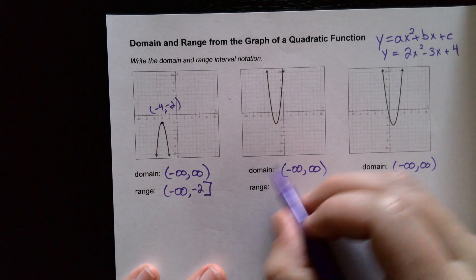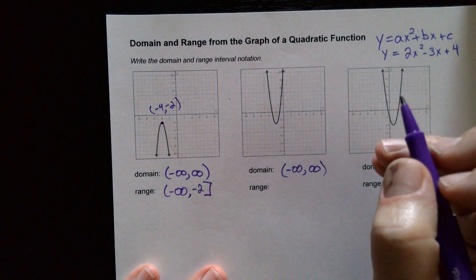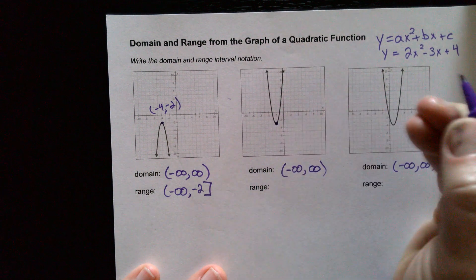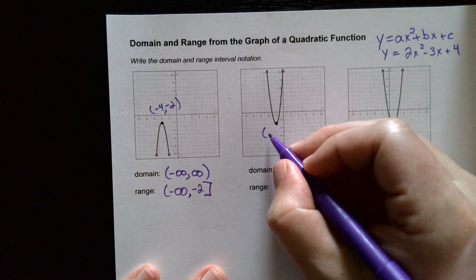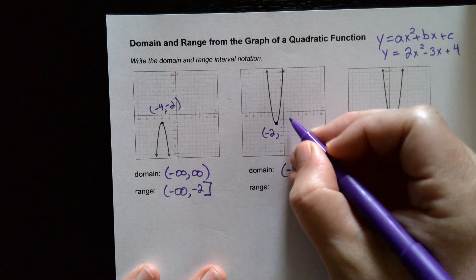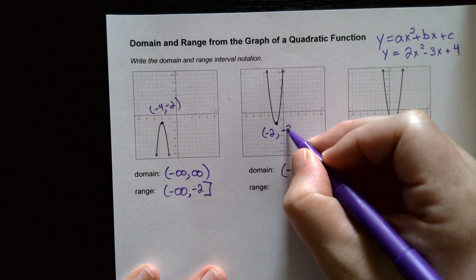Let's take a look at this next one's range. We already wrote the domain. It goes left and right forever. Now we've got to find the vertex right there, and that vertex is the point negative 2, and what's the y value there? Negative 3.